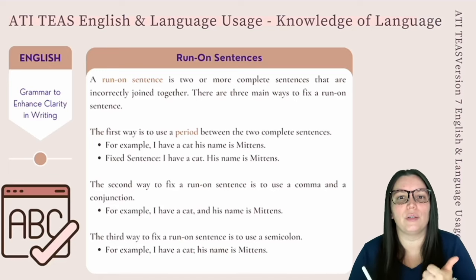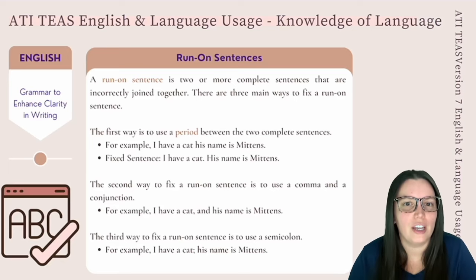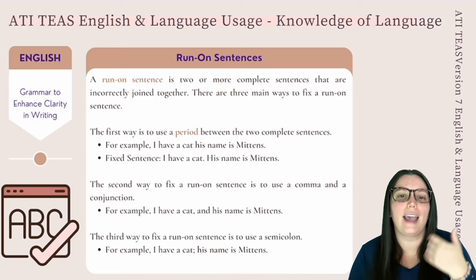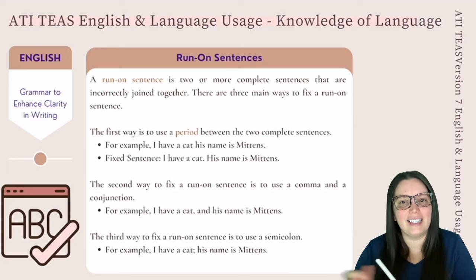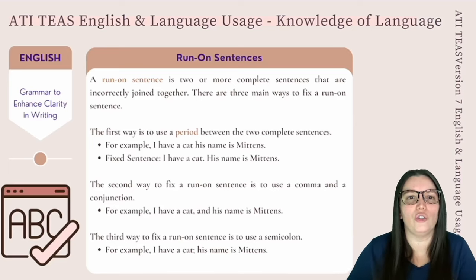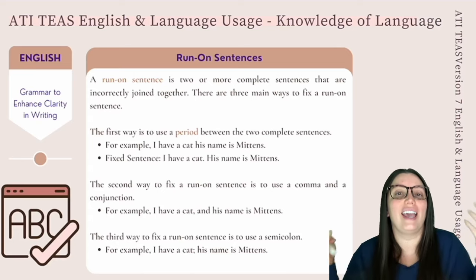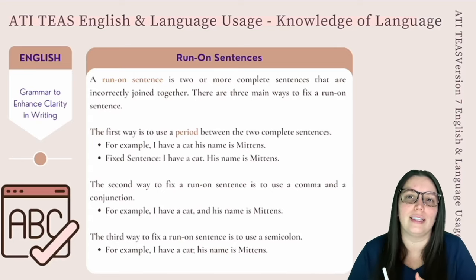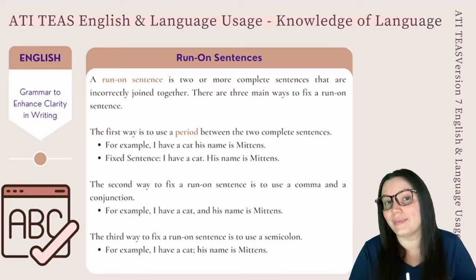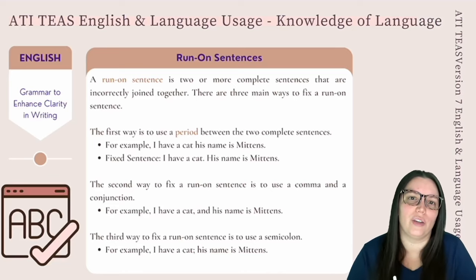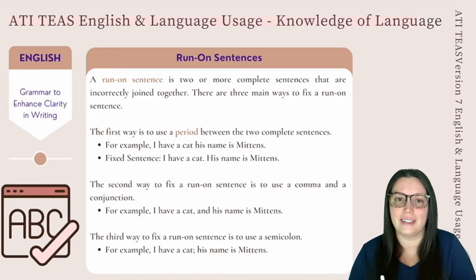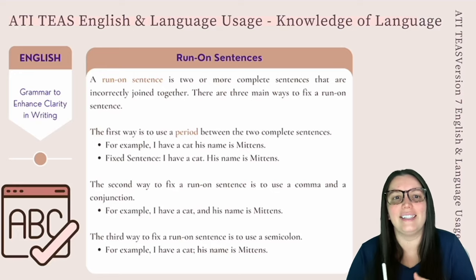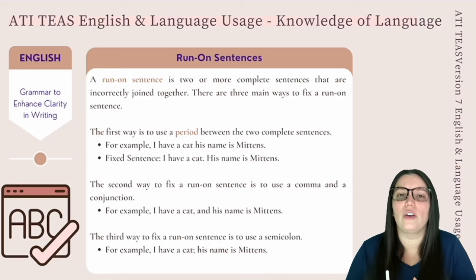The second way to fix a run-on sentence is with a comma or conjunction. For example: I have a cat, and his name is Mittens. The comma is used to join the two complete sentences together and the conjunction and signals that the second part of the sentence is related to the first. The last way to fix run-on sentences is by using a semicolon: I have a cat; his name is Mittens. The semicolon joins the two complete sentences together.